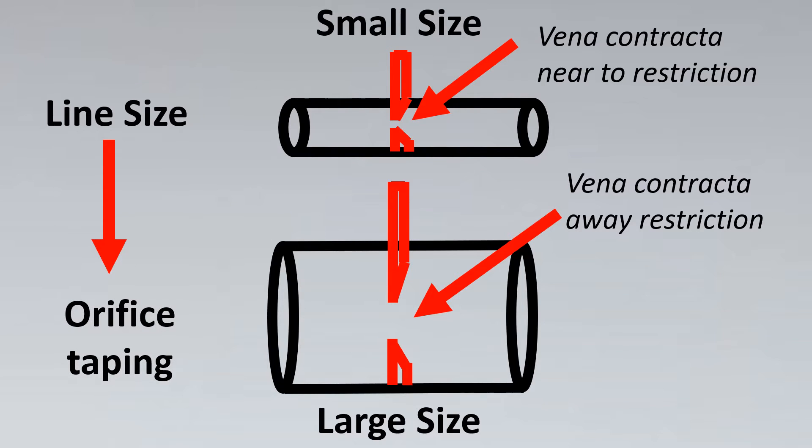The line size basically helps us to decide which orifice tapping to take. If it's nearer to the restriction, the Vena contracta, the tappings would also be taken from near to the orifice. And away is the Vena contracta from the restriction, the tappings are taken from that distance or as much approximation as possible from that distance to get the best DP that is available.